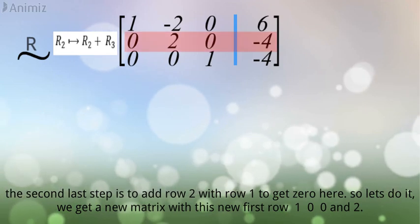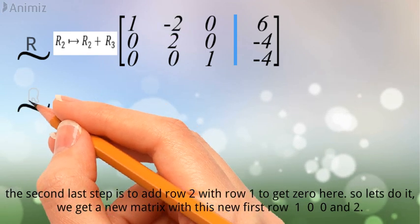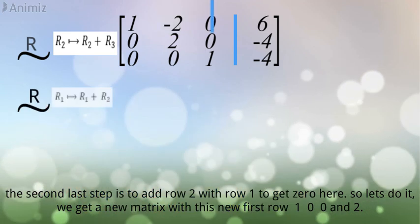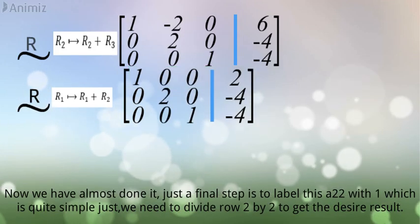The second last step is to add row 2 with row 1 to get 0 here. So let's do it. We get a new matrix with this new first row: 1, 0, 0, and 2. Now we have almost done it.